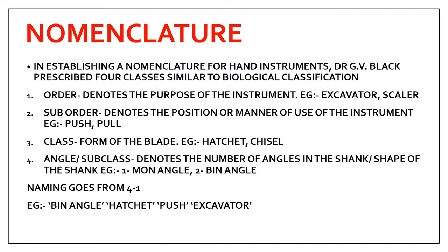In establishing a nomenclature for hand instruments, Dr. G.V. Black prescribed four classes similar to biological classification. Just as biological classification has order, suborder, class, and subclass, G.V. Black described the instruments used in conservative dentistry using these same four classes.